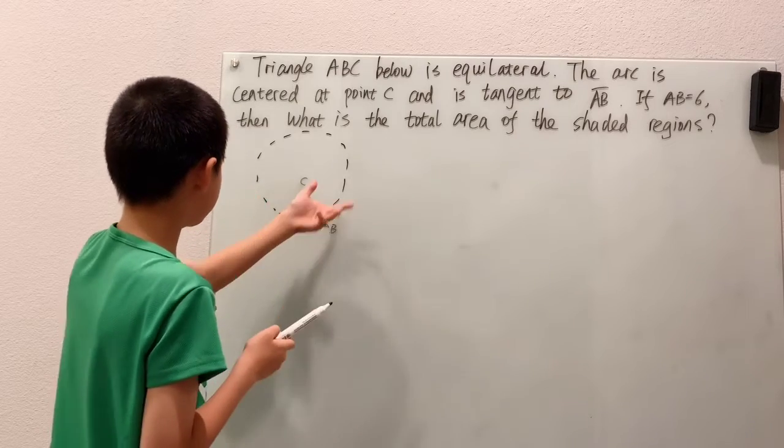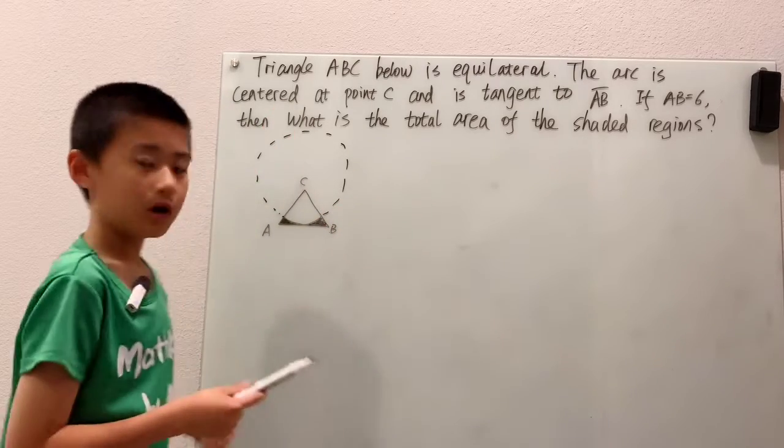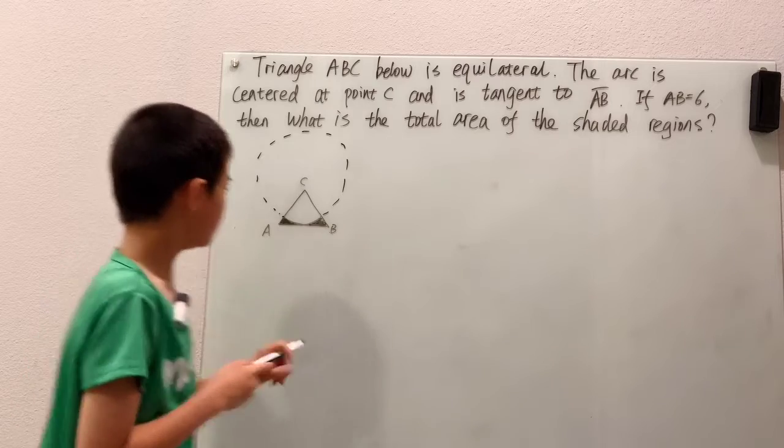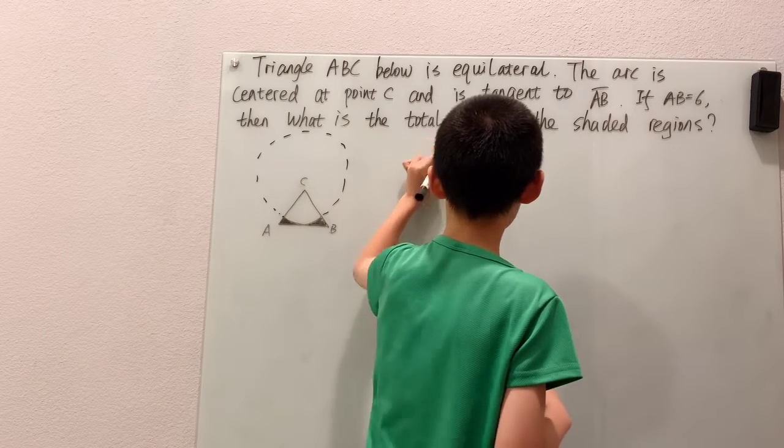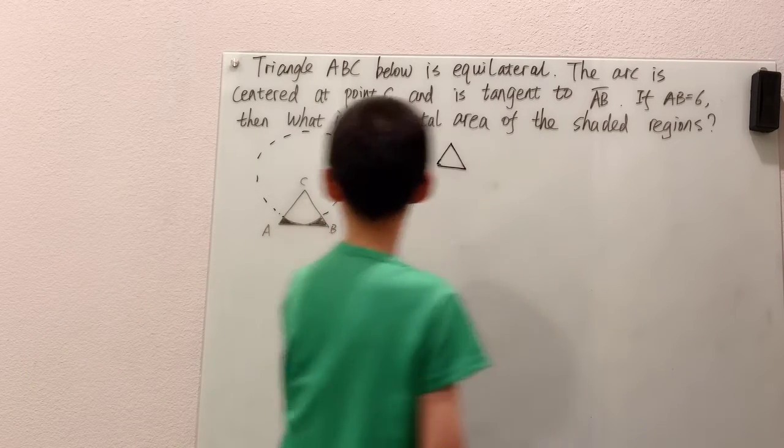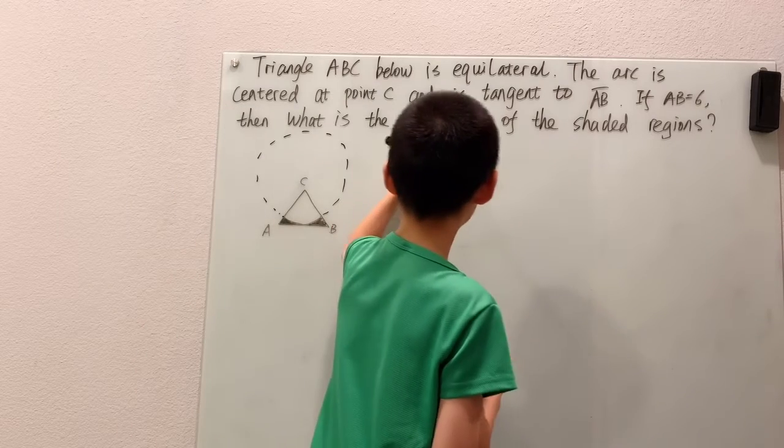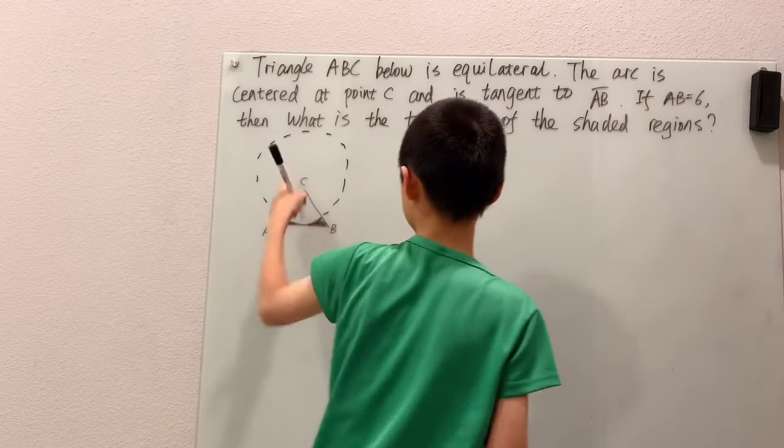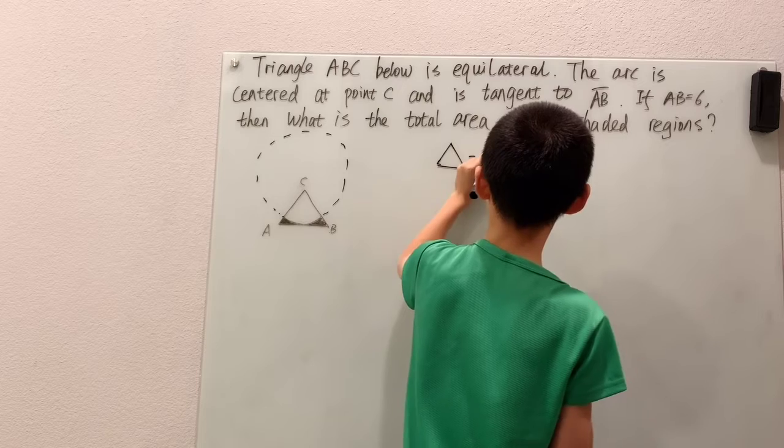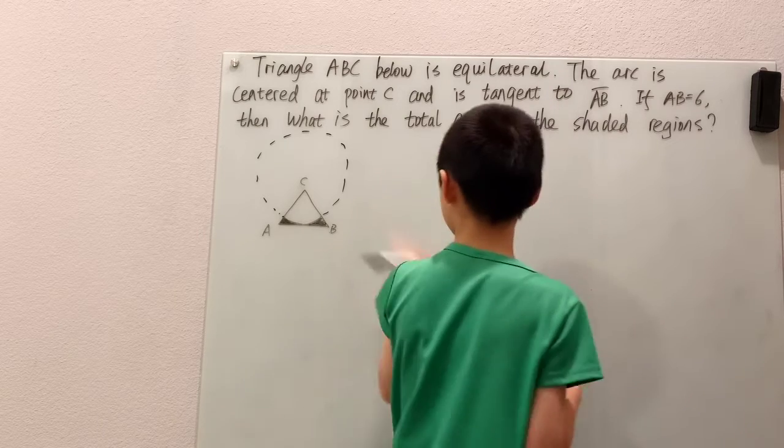that unshaded region, which is basically just a sector of the whole circle. So, that kind of gives us a plan, right? We have our big triangle down here, and then we subtract off the area of that sector,